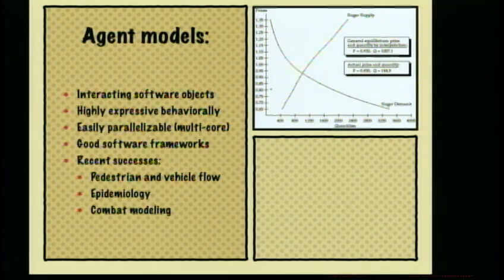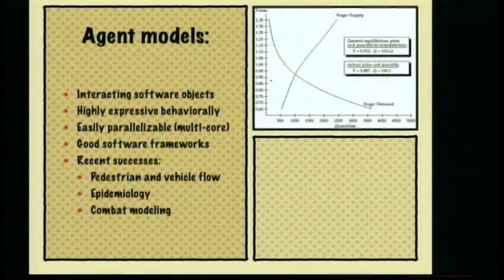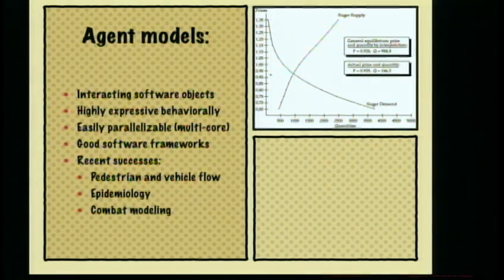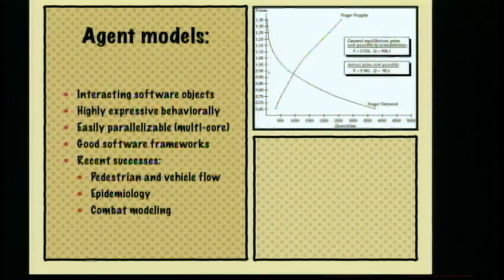The animation up here on the right is basically a supply and demand picture for the simple Sugarscape world shown a couple slides ago. The dot bouncing around is where people are actually trading versus what the supply and demand picture says they should trade at. You see an obvious discrepancy there. We can use the agent-based models to determine whether the mathematical-analytical prediction matches what happens in a distributed, decentralized world.